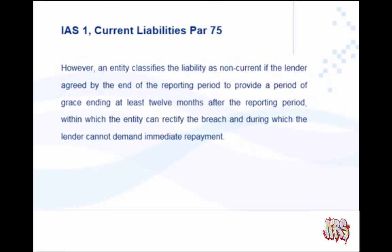Comparing paragraph 74 with paragraph 75: paragraph 75 says an entity classifies the liability as non-current if the lender agreed by the end of the reporting period to provide a period of grace ending at least 12 months after the reporting period, within which the entity can rectify the breach and during which the lender cannot demand immediate repayment. So paragraph 74 says if you agree with the lender after year end it is a current liability, while paragraph 75 says if you agree with the lender by year end it is a non-current liability.